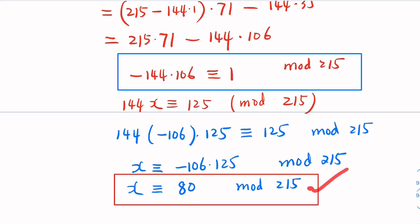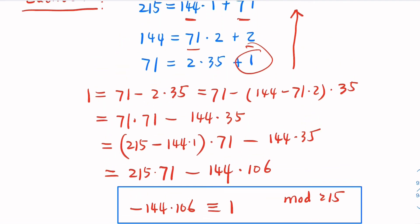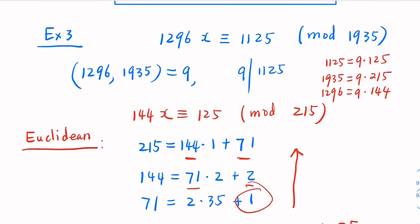So, that's the solution. Look at the original equation, however. That's a different modulus. It's mod 1935, which is 9 times the current modulus. So, usually, it means we have 9 different solutions. Let's figure that out.